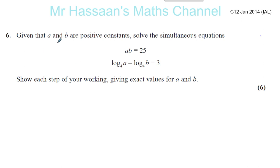Given that A and B are positive constants, solve the simultaneous equations AB equals 25 and log to the base 4 of A minus log to the base 4 of B equals 3.